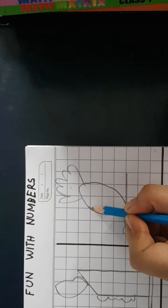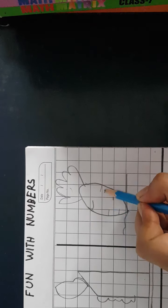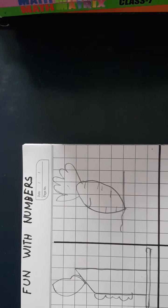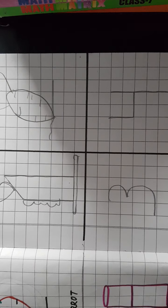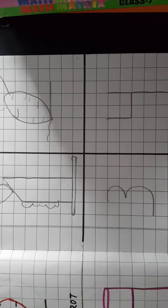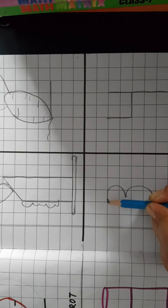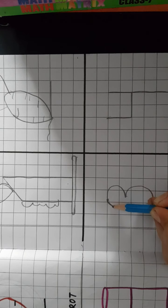Aur isko natural denge, hum beautiful denge, hum halki halki si line draw kar denge. To yahan pe hum halki si lines draw kar denge. Right?